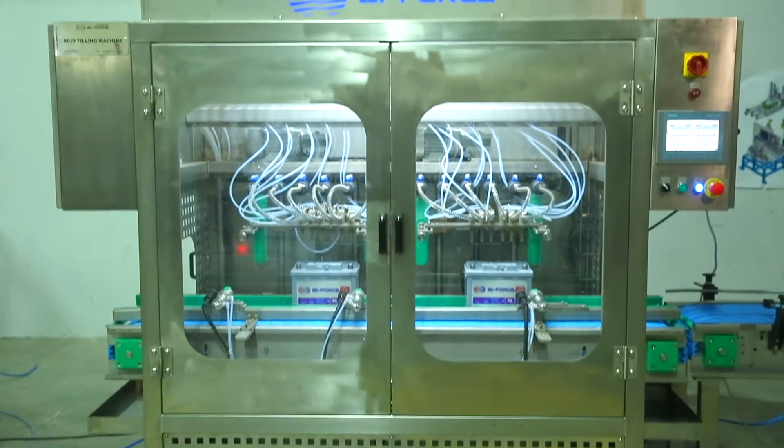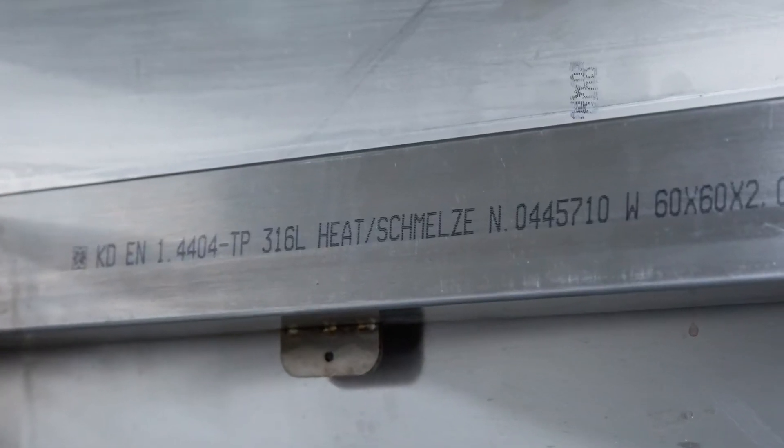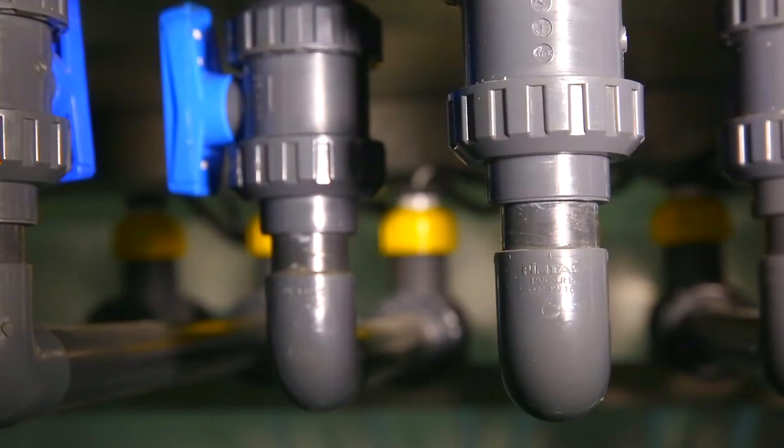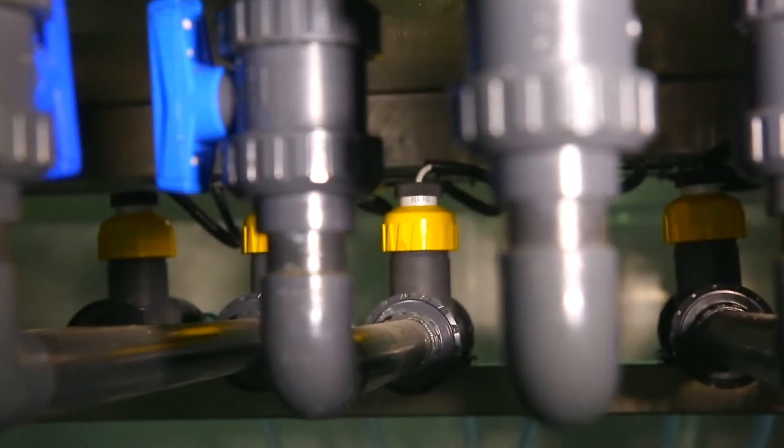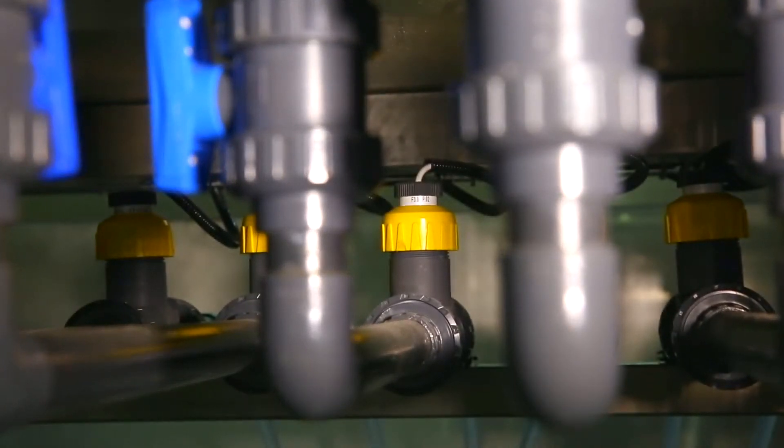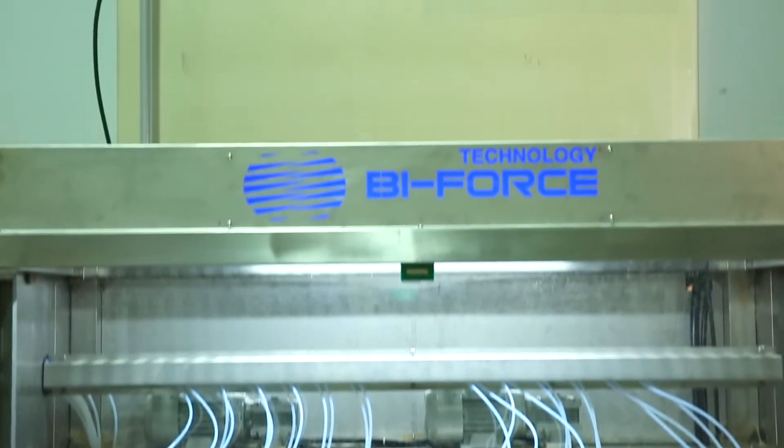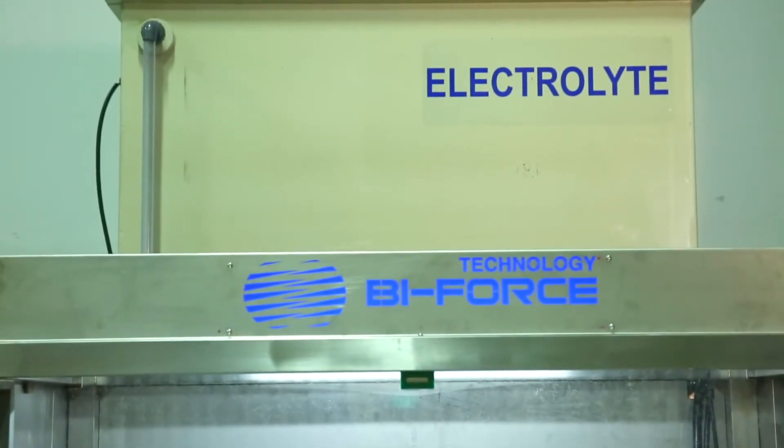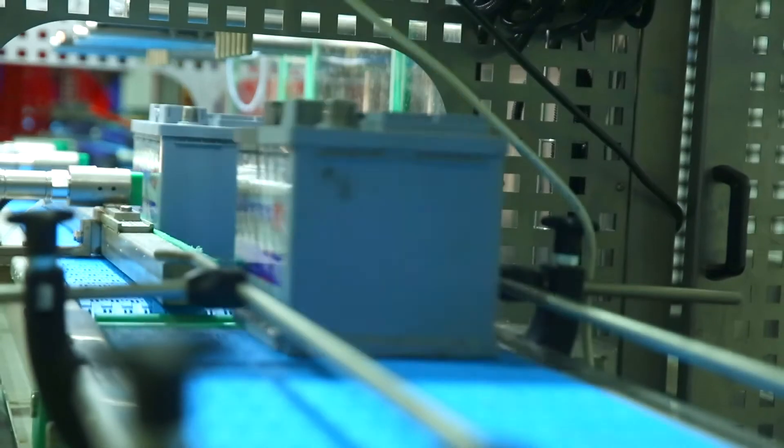Chassis and protective panels are made of 316L stainless steel. Tanks and pipes are made of polypropylene and PVC. Reducers are covered with acid-resistant paint. The machine can be used as a stand-alone installation or as part of the battery formation line.